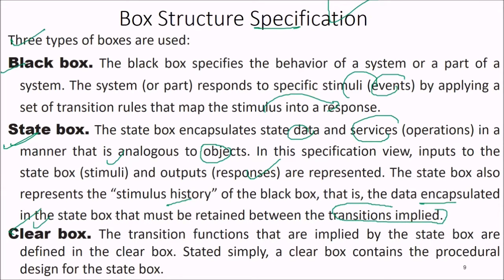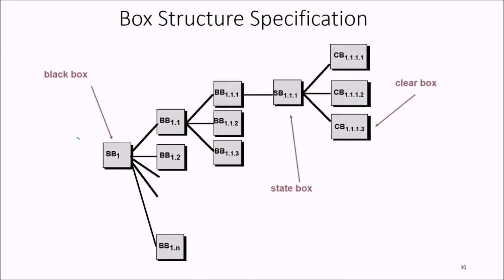The clear box contains the procedural design for the state box — the transition functions implied by the state box are defined here. In the hierarchy, we start with the black box (vb1), stepwise refine it through vb1.1 to vb1.n, reach the state box (sb), and then refine further into the clear box.